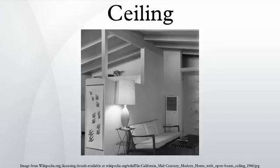A concave or barrel-shaped ceiling is curved or rounded upward, usually for visual or acoustical value, while a coffered ceiling is divided into a grid of recessed square or octagonal panels, also called a lacuna ceiling.